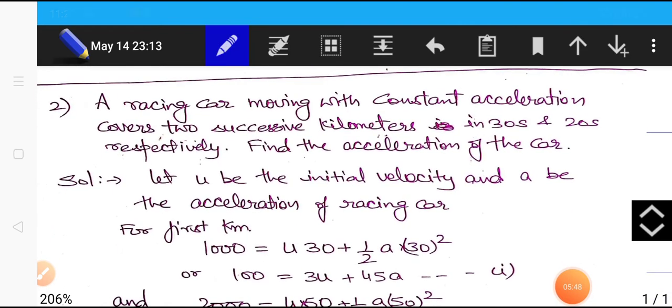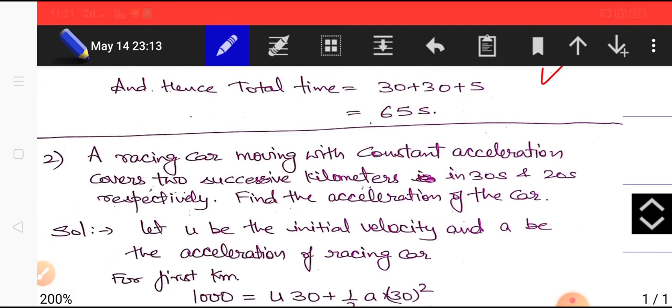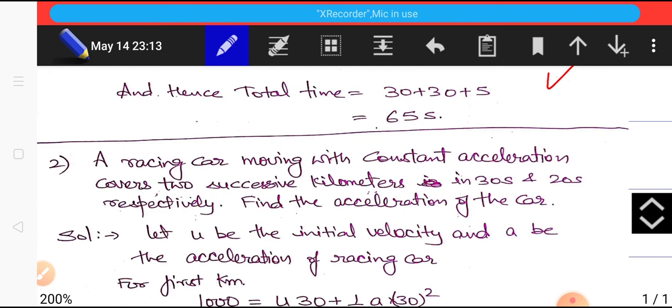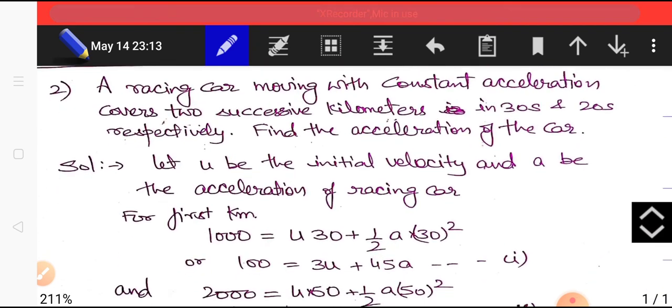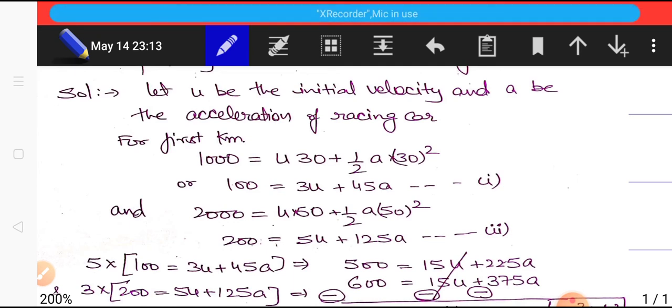Let us consider one more example. A racing car moving with constant acceleration covers two successive kilometers in 30 seconds and 20 seconds respectively. Find the acceleration of the car.